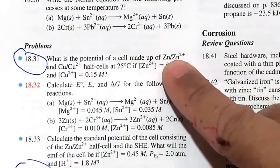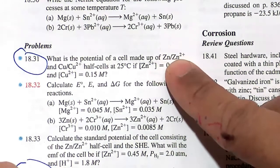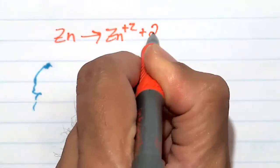Here we have a zinc-zinc plus two couple. Zinc going to zinc plus two. Let's write that down. The zinc couple is zinc going to zinc plus two, balanced with two electrons.